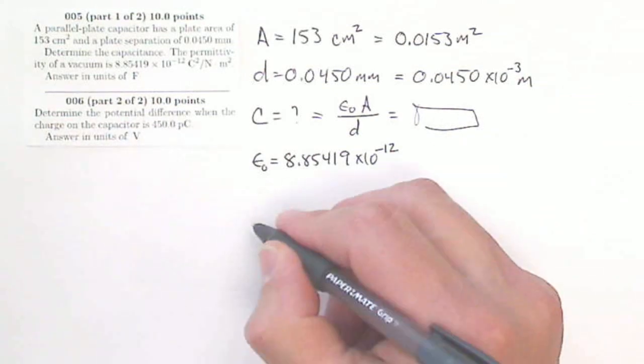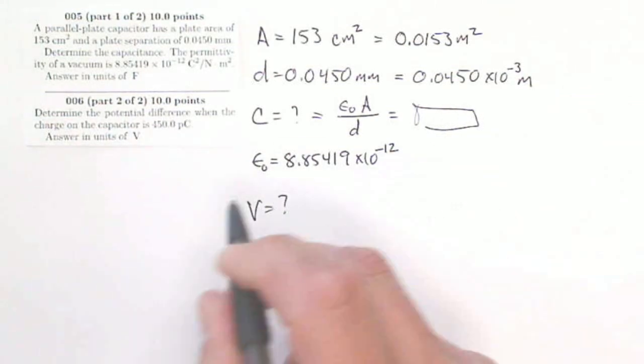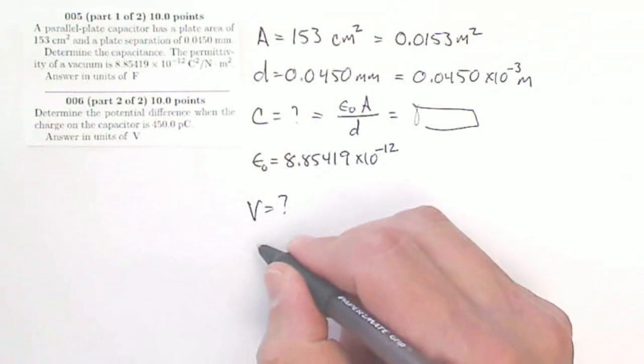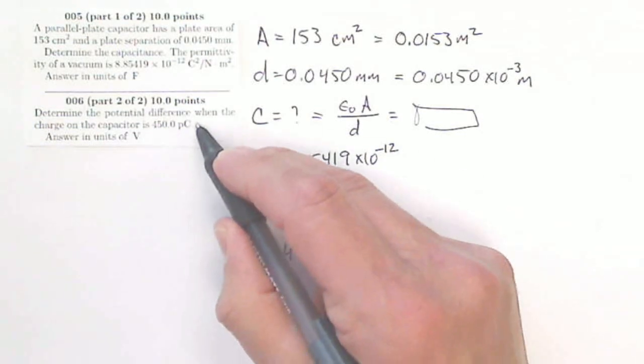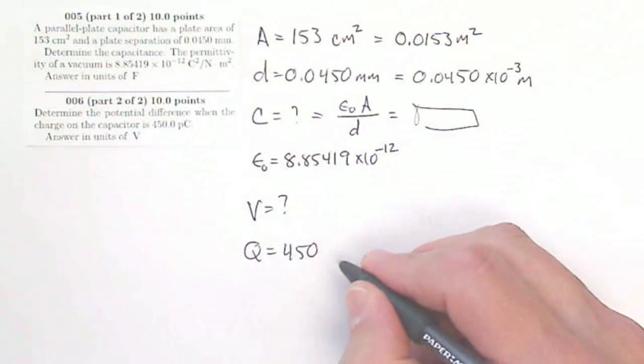Now, determine the potential difference. I'm looking for V equals question mark. When the charge on the capacitor, Q, equals 450 picocoulombs, that's pico, picocoulombs.